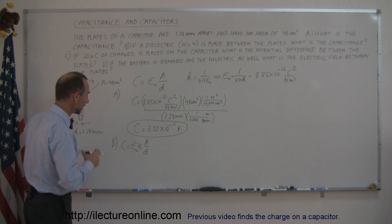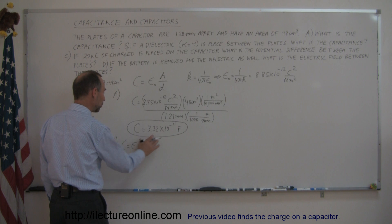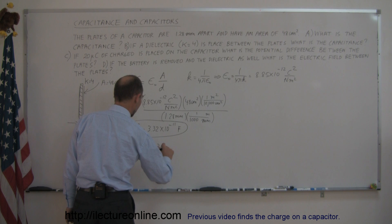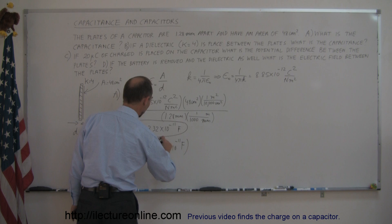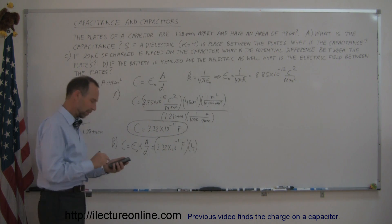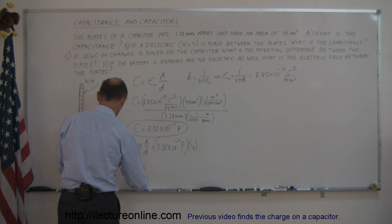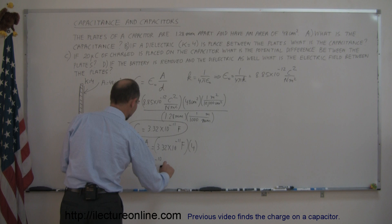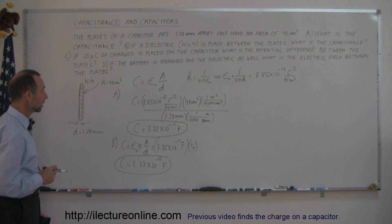The capacitance with the dielectric is the same number simply multiplied by the constant K. So it equals 3.32 times 10 to the minus 11 farads, multiplied by the dielectric constant 4, giving us 1.33 times 10 to the minus 10 farads. We've increased the capacitance fourfold by placing a dielectric inside.